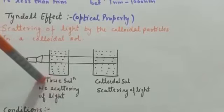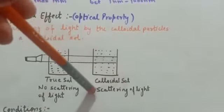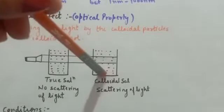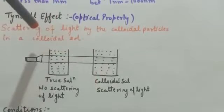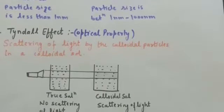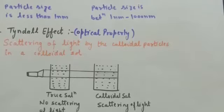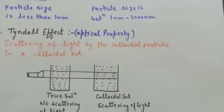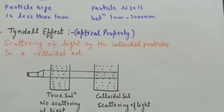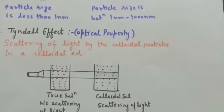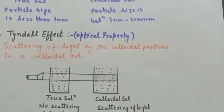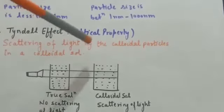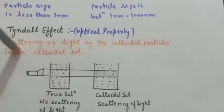In case of a true solution there is no scattering of light, whereas in a colloidal solution scattering is observed. In 1903, an ultramicroscope was developed to study the Tyndall effect. The ultramicroscope does not render actual colloidal particles visible but only observes the light scattered by them — it does not give information about the size or shape of the colloidal particles. That is all about the Tyndall effect.